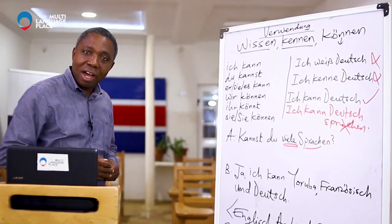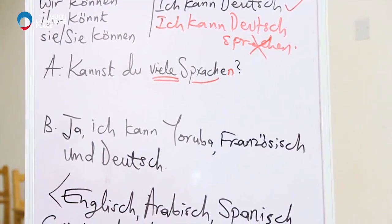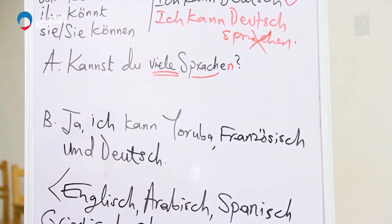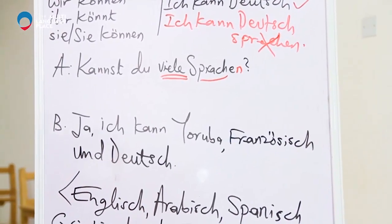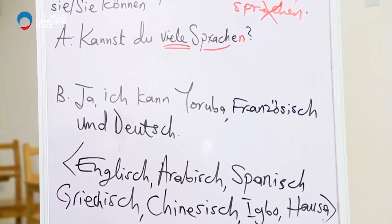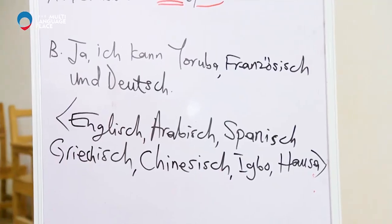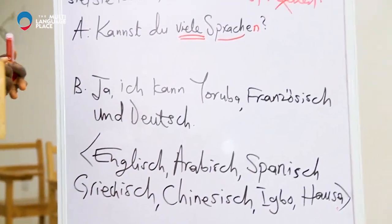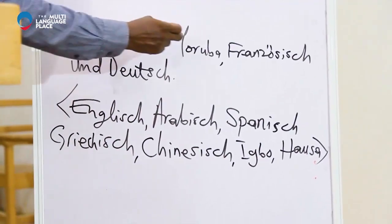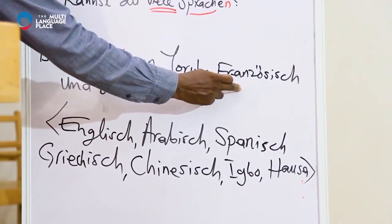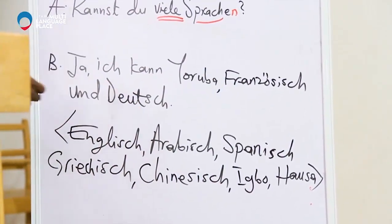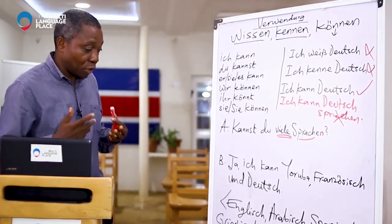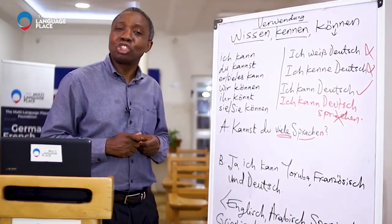The response is: 'Ja. Ich kann Yoruba.' That's the language in West Africa — Nigeria. 'Ich kann Yoruba. Ich kann Französisch und Deutsch.' So that means I can speak and understand Yoruba, French, and German. Say it after me: 'Ja. Ich kann Yoruba, Französisch und Deutsch.'